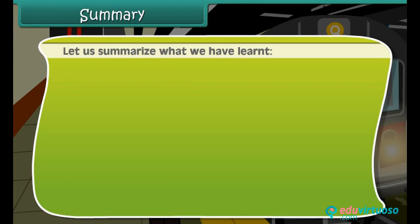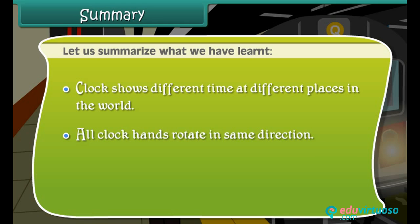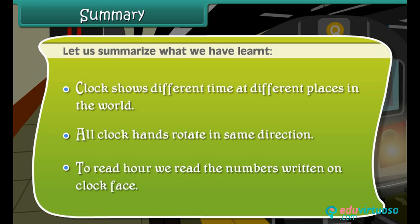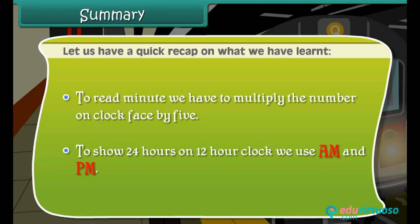Let us summarize what we have learned. Clocks show different times at different places in the world. All clock hands rotate in the same direction. To read the hour, we read the numbers written on the clock face. To read minutes, we multiply the number on the clock face by five. To show twenty-four hours on a twelve-hour clock, we use AM and PM.